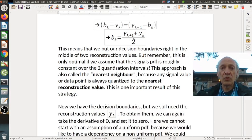And this looks fairly intuitive. This is simply the average between the two neighboring reconstruction values. So this means that we put our decision boundaries right in the middle of two reconstruction values. So kind of makes sense. But remember this is only optimal if you assume that the signal pdf is roughly constant over the two quantization intervals. Right. So this is our assumption now.